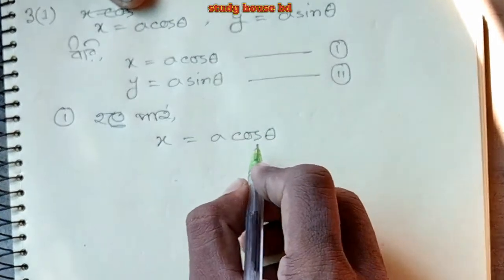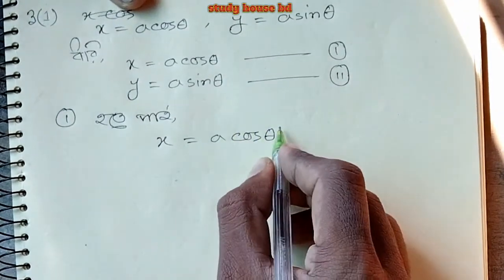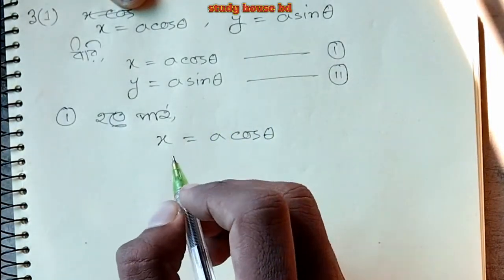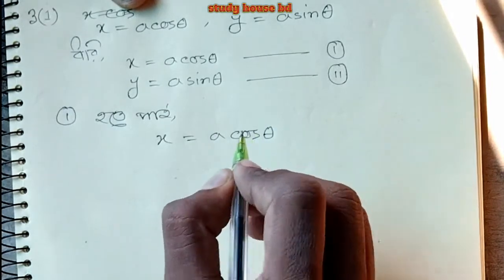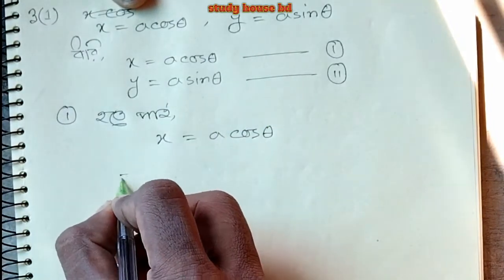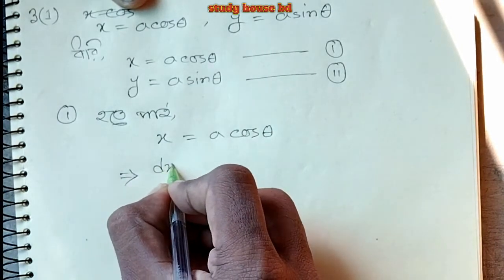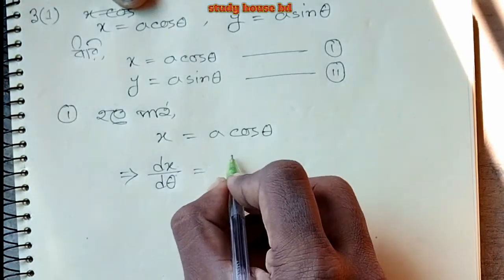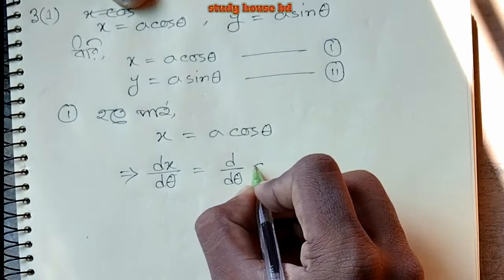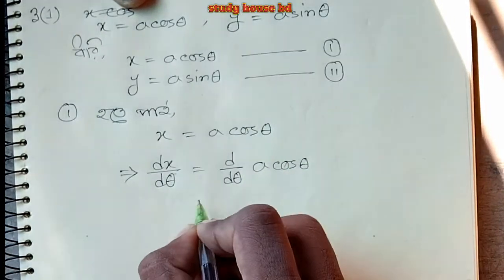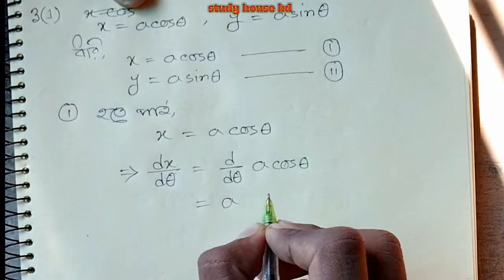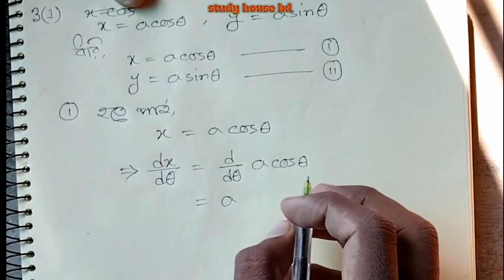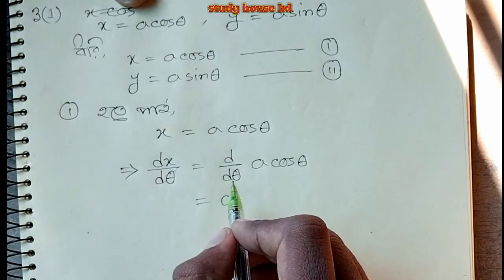See, here is theta. This is the way I am going to show you. Theta is theta. d/dx of x means sin x. Theta is theta cos theta.